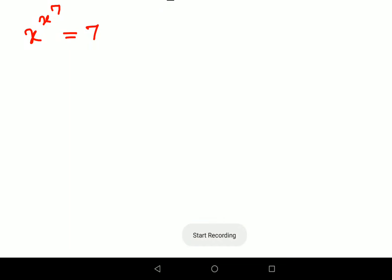Welcome everyone. Today we are going to solve this very nice indices problem. The question given here is x^(x^7) = 7, and we need to find the value of x.